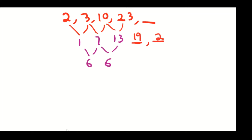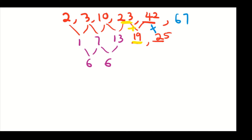The following first differences would be 19 and then 25. To find the next term, we add 19 plus 23, which gives us 42. If you want to find another term, 42 plus 25 gives you 67. So 42 is the answer for this question.